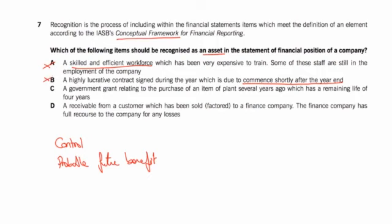Part C: a government grant relating to the purchase of an item of plant several years ago. We would have received that government grant several years ago, so it's not going to bring in probable future economic benefit — it already has. It would have been an asset many years ago, not now.